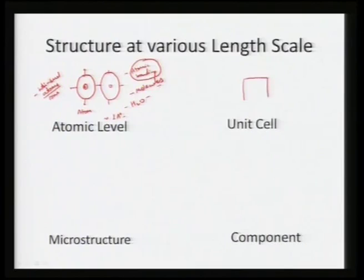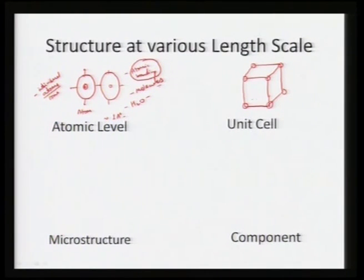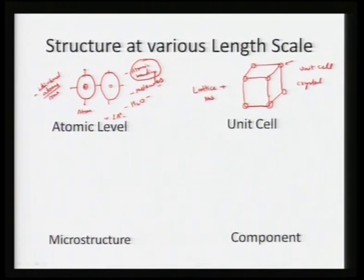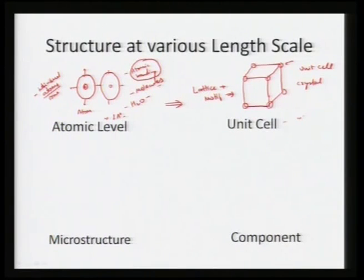Once we come to a unit cell, it comprises many more atoms. We start seeing some regularity — a unit cell comprises atoms at different locations. It is defined by a lattice with certain motifs or bases to call it a crystal or unit cell. From a lattice, we add a motif and get a crystal defined in terms of a unit cell, at a length scale of a couple of angstroms to tens of angstroms.